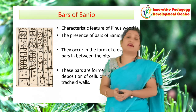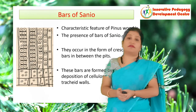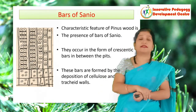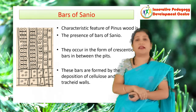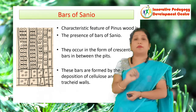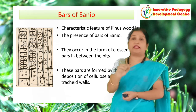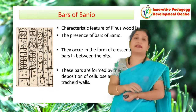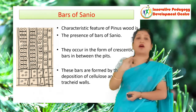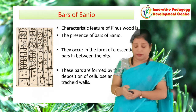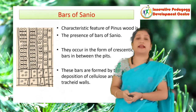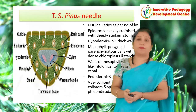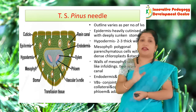There is another important structure known as the bars of Sanio — this is the deposition of cellulose and pectin forming crescentic strips found between the bordered pits — also found during secondary growth.